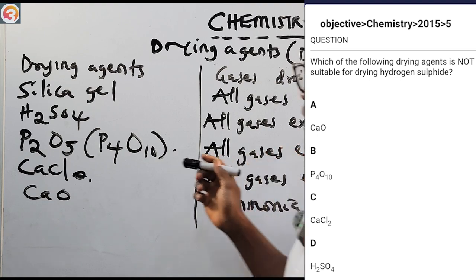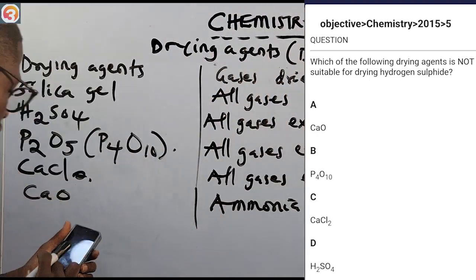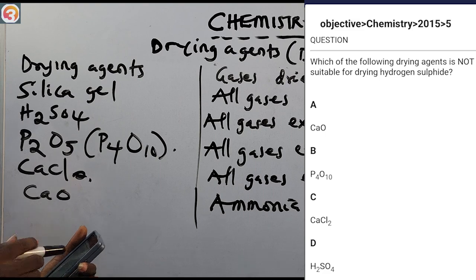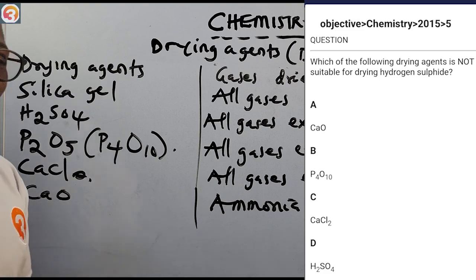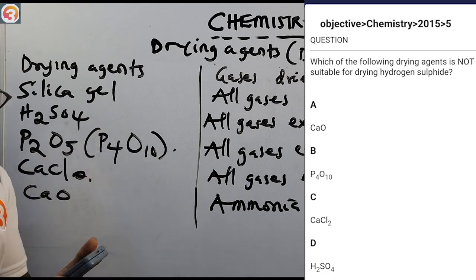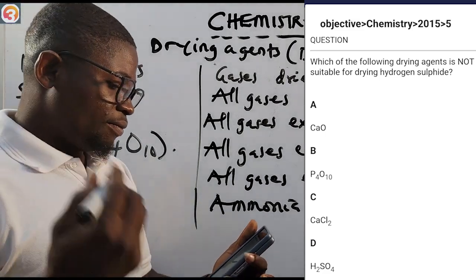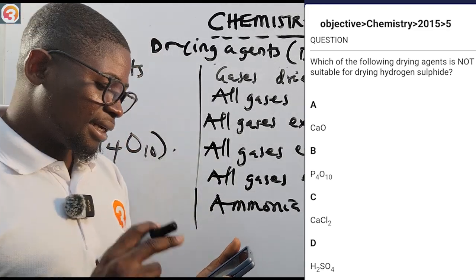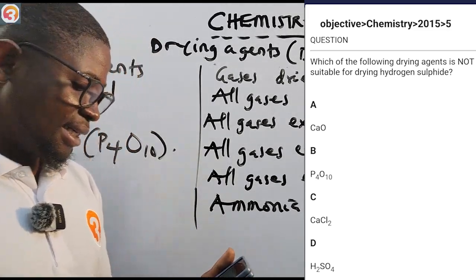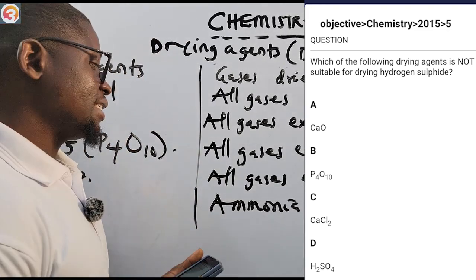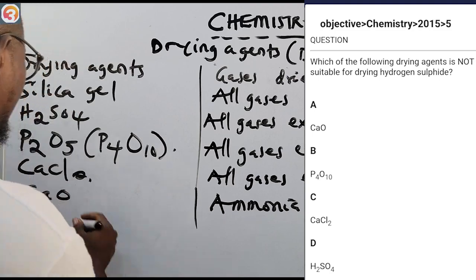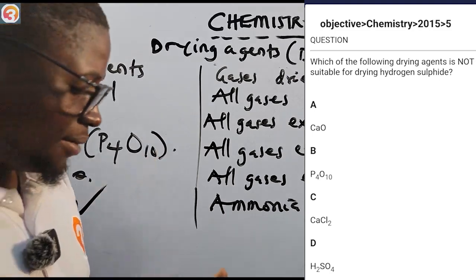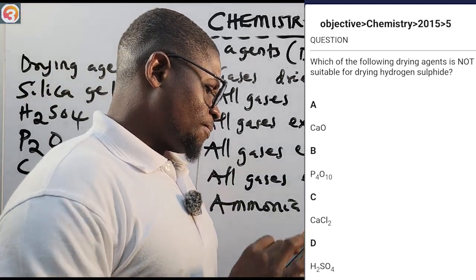Now back to the 2016 question number 22: ammonia gas can be dried using — A) H2SO4, B) P4O10, C) calcium oxide, D) CaCl2. The correct answer is C — calcium oxide. Calcium oxide can dry ammonia.